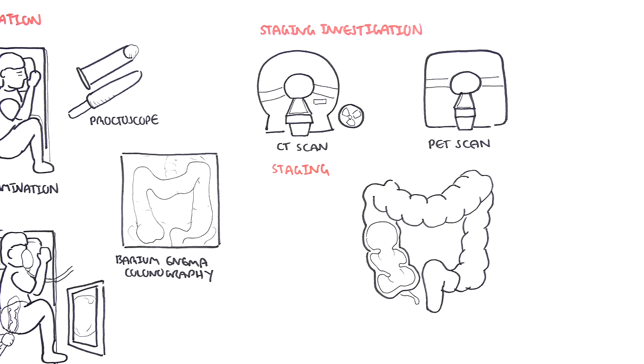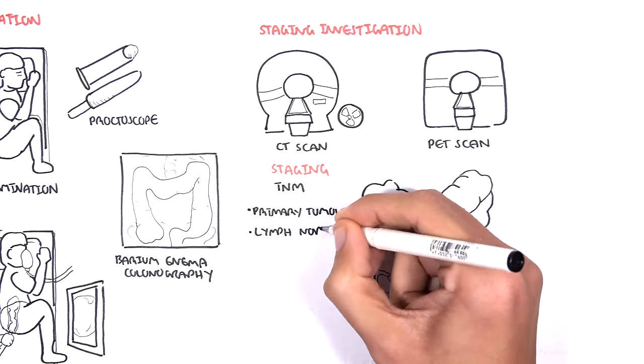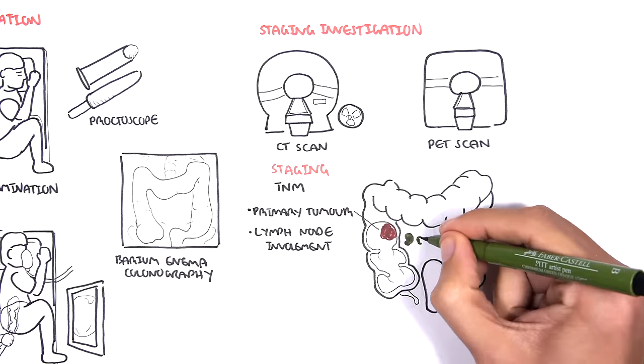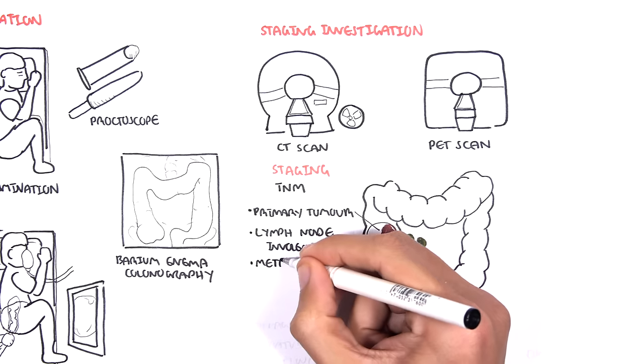For staging itself, there are two forms of staging. The first is the TNM staging, which looks at T, the primary tumor, N, the lymph node, and M, metastasis.